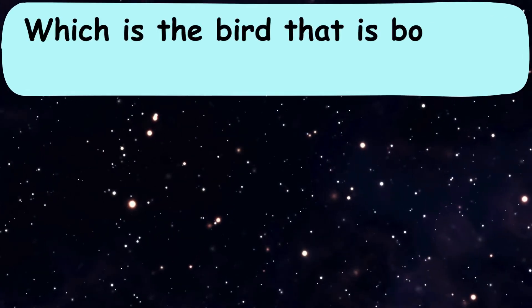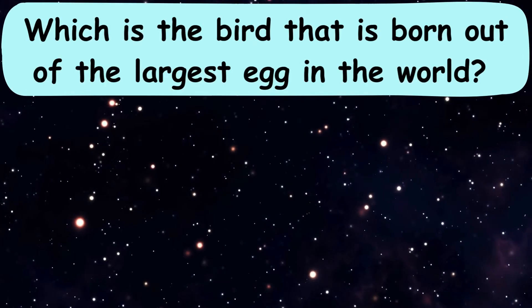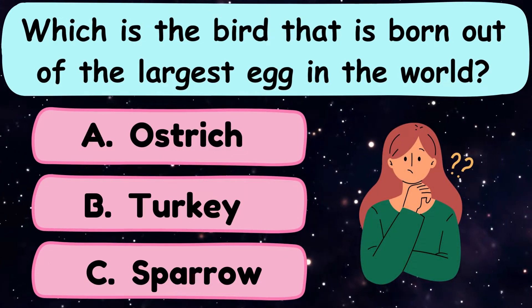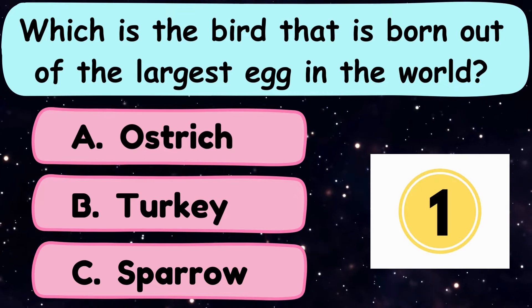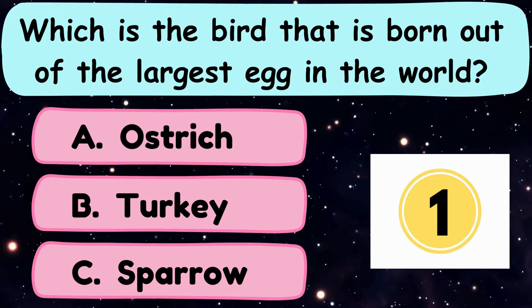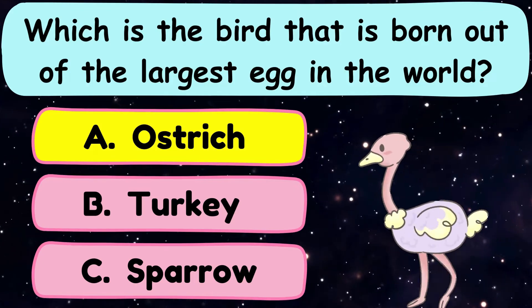Question number 4. Which is the bird that is born out of the largest egg in the world? A. Ostrich, B. Turkey, or C. Sparrow? The correct answer is option A. Ostrich.